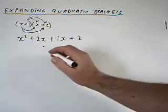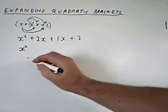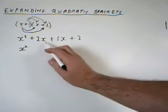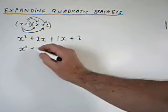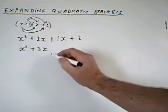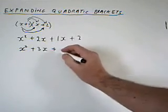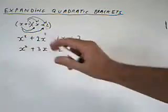Now we can simplify a bit, so there's only one term in x squared, so that stays as x squared. Now here, we've got two terms in x. So that's 2 plus 1, 3x, and then add the 2 on the end. And there we are. That's a quadratic expression made from these two binomials.